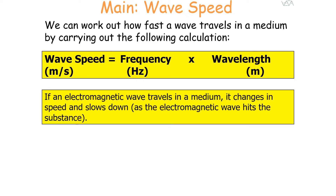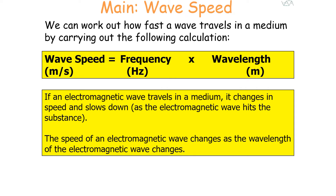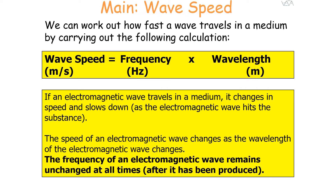If an electromagnetic wave travels in a medium, it changes speed and slows down as it hits a substance. The speed of an electromagnetic wave changes as the wavelength changes, while the frequency of an electromagnetic wave remains unchanged at all times after it has been produced.